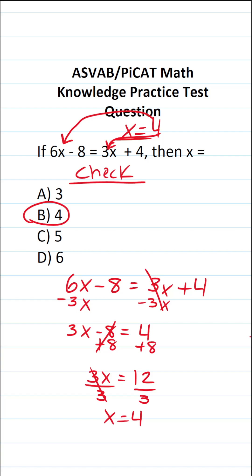And if it makes a true mathematical statement, we know we did our work correctly. So this would become 6 times 4 minus 8 equals 3 times 4 plus 4. 6 times 4 is 24 minus 8 equals 3 times 4 is 12 plus 4.